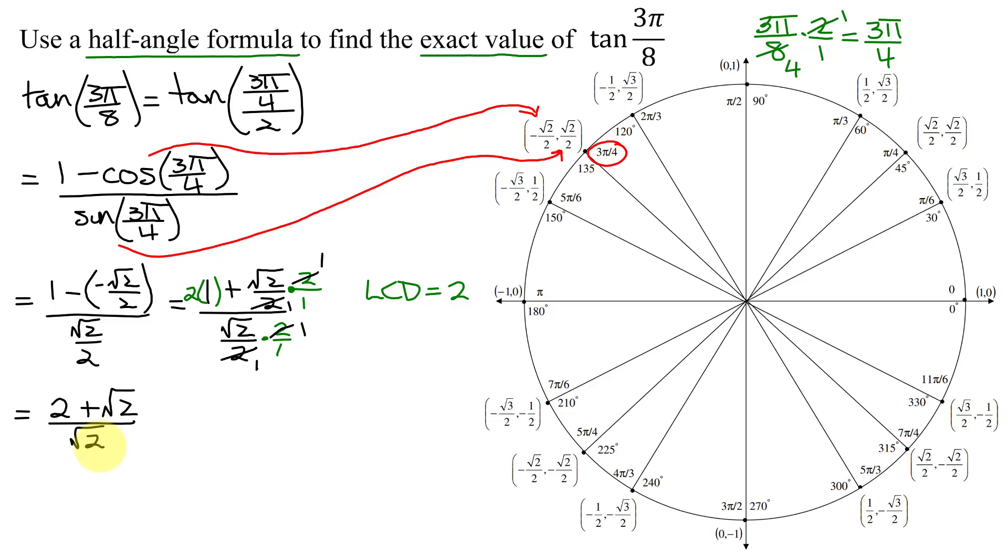Now to simplify this expression, I think it would be simpler to break it up. So I'm going to have 2 divided by the square root of 2 plus the square root of 2 divided by the square root of 2.